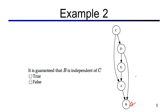What can we say about b and c? In this case there is no evidence. Let's consider all paths between b and c. This one consists of one triple — a causal chain where the middle node is not observed — so this is an active triple, which means the entire path is active. We cannot guarantee independence of c and b.